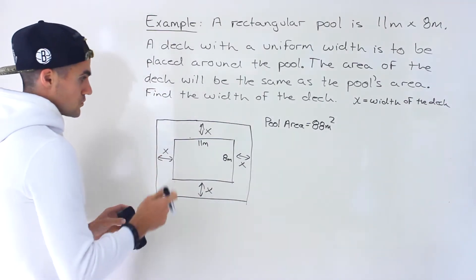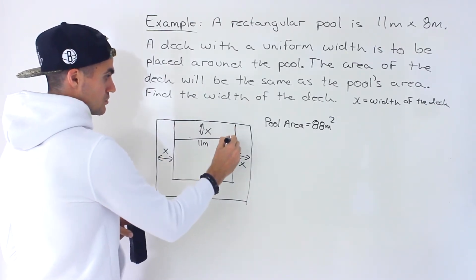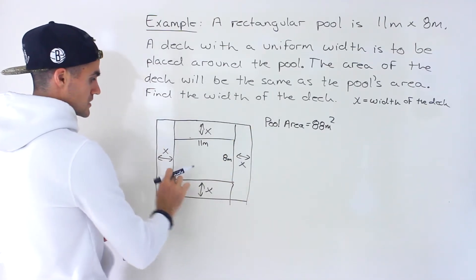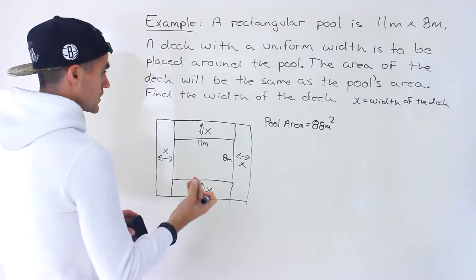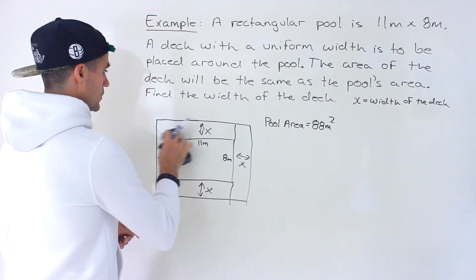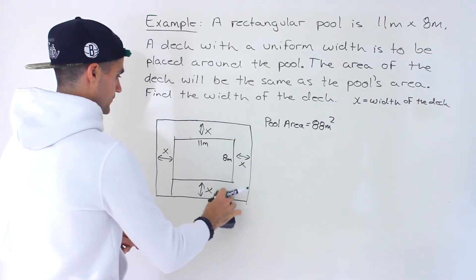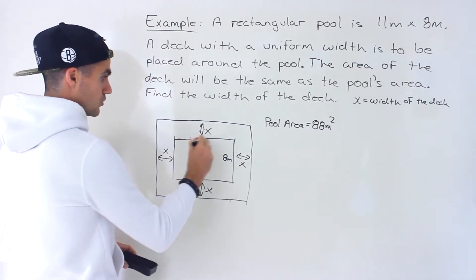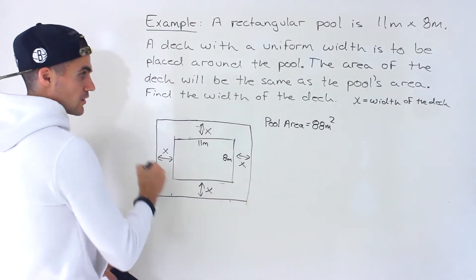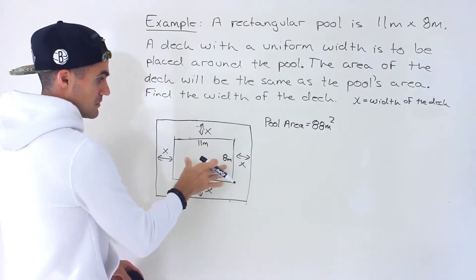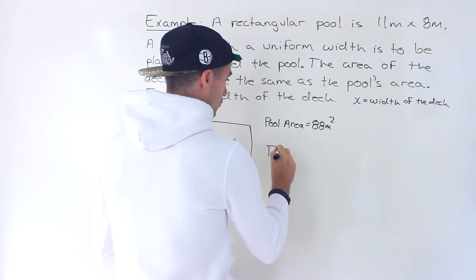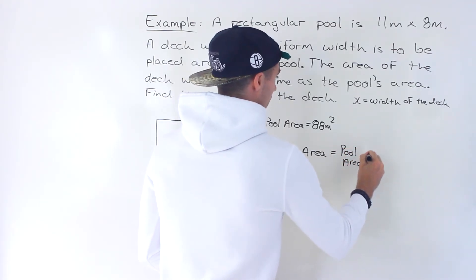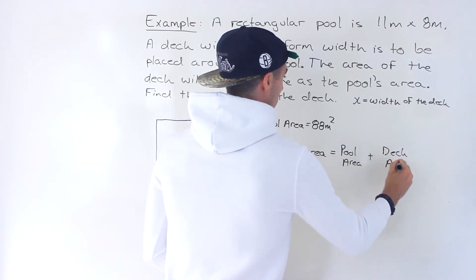How can we get an expression for the deck's area? There are different ways. You can split it into different rectangles, but the way I'm going to do it is to take the large total area — the pool plus the deck around it. The total area equals the pool area plus the deck area.